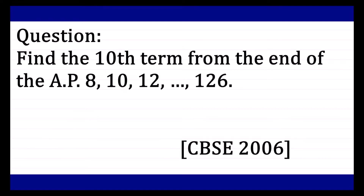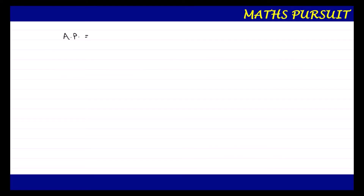Let us focus our attention here and see how quickly and easily we can solve this. The given arithmetic progression is 8, 10, 12, ..., 126. The question is asking us to find out the 10th term from the end — that means we need to find the 10th term moving from the end, not from the beginning.